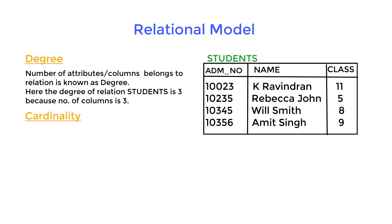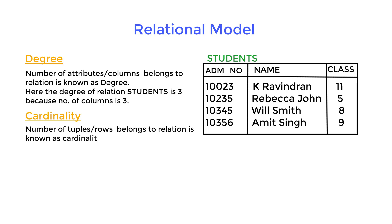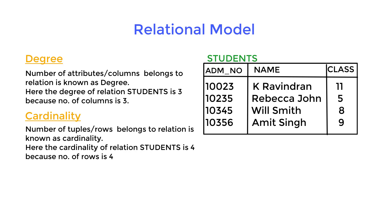Cardinality: the number of tuples or rows belonging to a relation is known as cardinality. Here the cardinality of the relation student is four, because the number of rows is four.